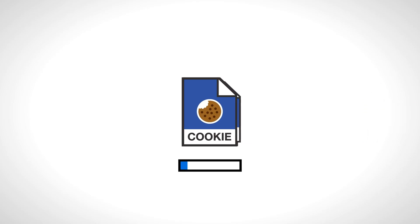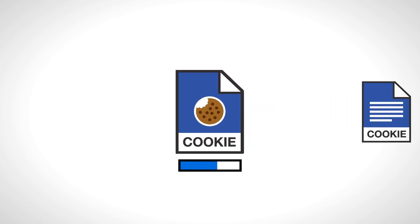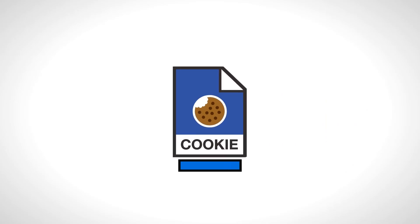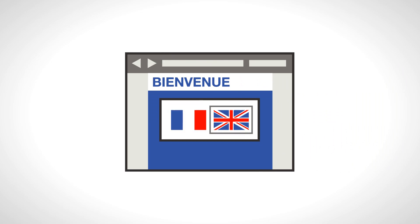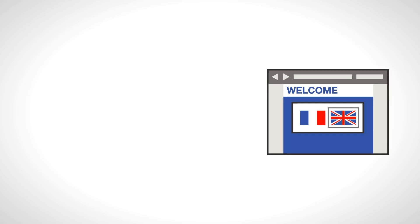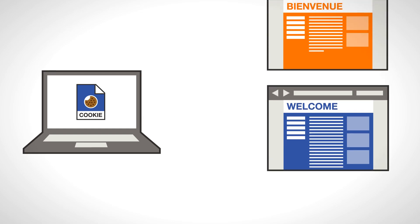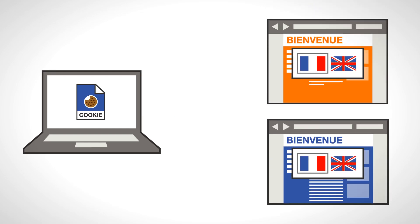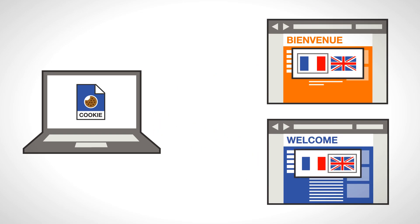A cookie can only contain so much text, but apart from its size, the possibilities are endless. What exactly is saved to a cookie is up to the creator of the website you are visiting. Contrary to the stuff a cookie can contain, there are limits to who can read your cookies. Only the same website that saves information to a cookie can access it.